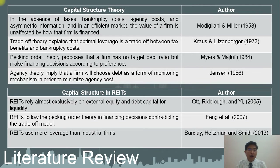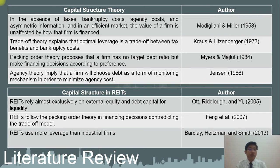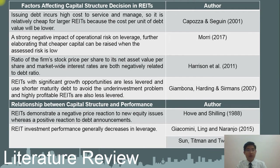For the literature review, it is categorized into four parts: capital structure theory starting with the Modigliani-Miller theorem on capital structure irrelevance principle, followed by trade-off, pecking order, and agency theories — the very famous and common theories in explaining capital structure — capital structure in REITs, factors affecting capital structure decisions, and finally the relationship between the two.